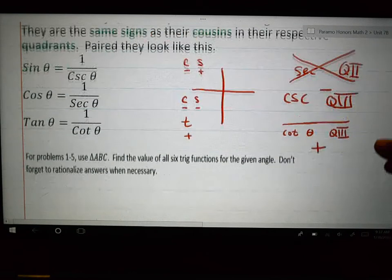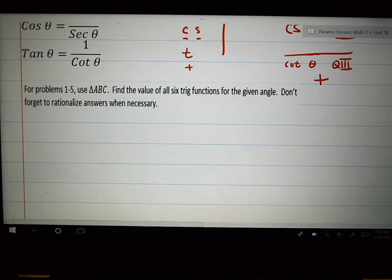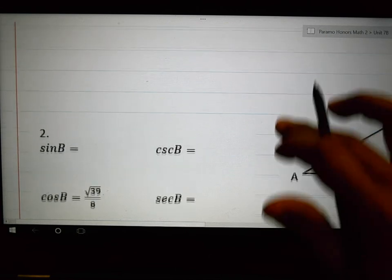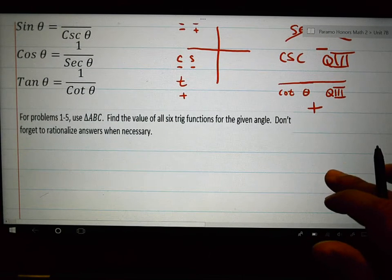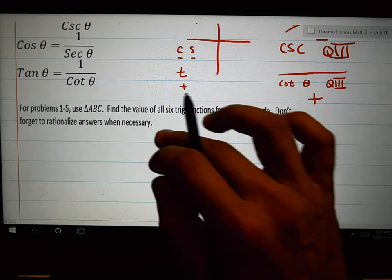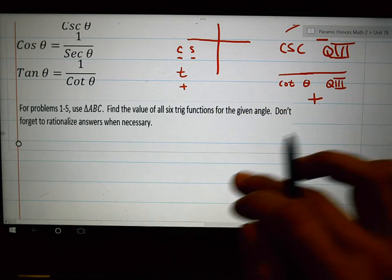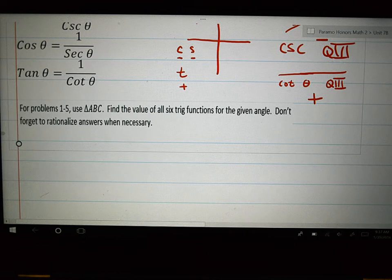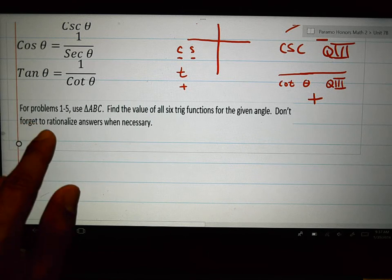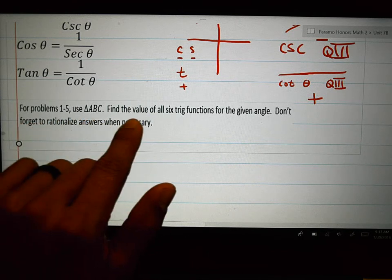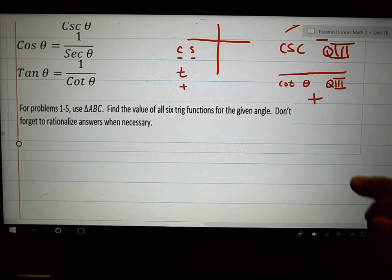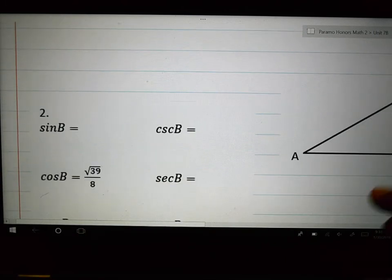The rest of what I have you do is on your worksheet. If you want to do this on your worksheet, these are examples. Feel free to do them with me. Here are my directions. For problems one through five, use triangle ABC. Find the value of all six trig functions for the given angle. Don't forget to rationalize answers when necessary. I'm going to do number two with you.